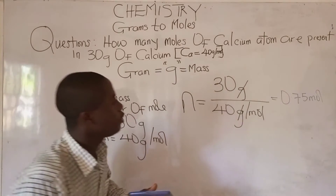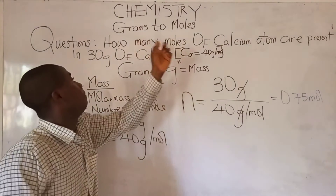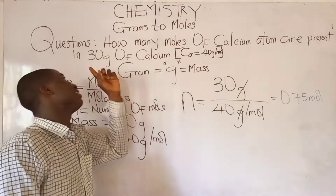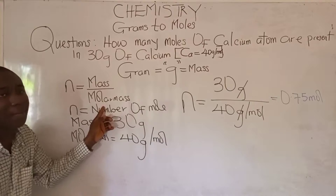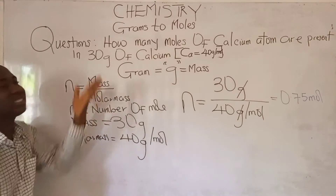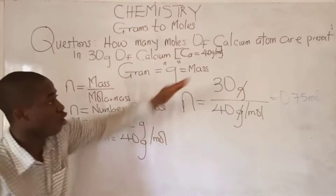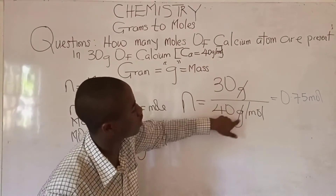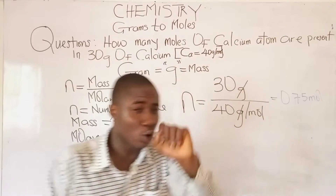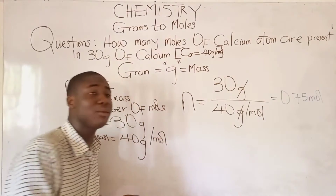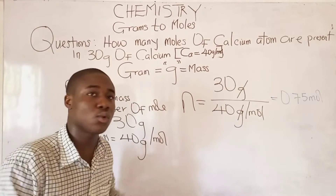So basically, whenever we are asked to calculate moles and we are given grams, we simply use the formula: number of moles = mass over molar mass. Here the mass is 30 grams and the molar mass of calcium is 40 grams per mole. Grams cancels grams, leaving moles, which is the unit for number of moles.